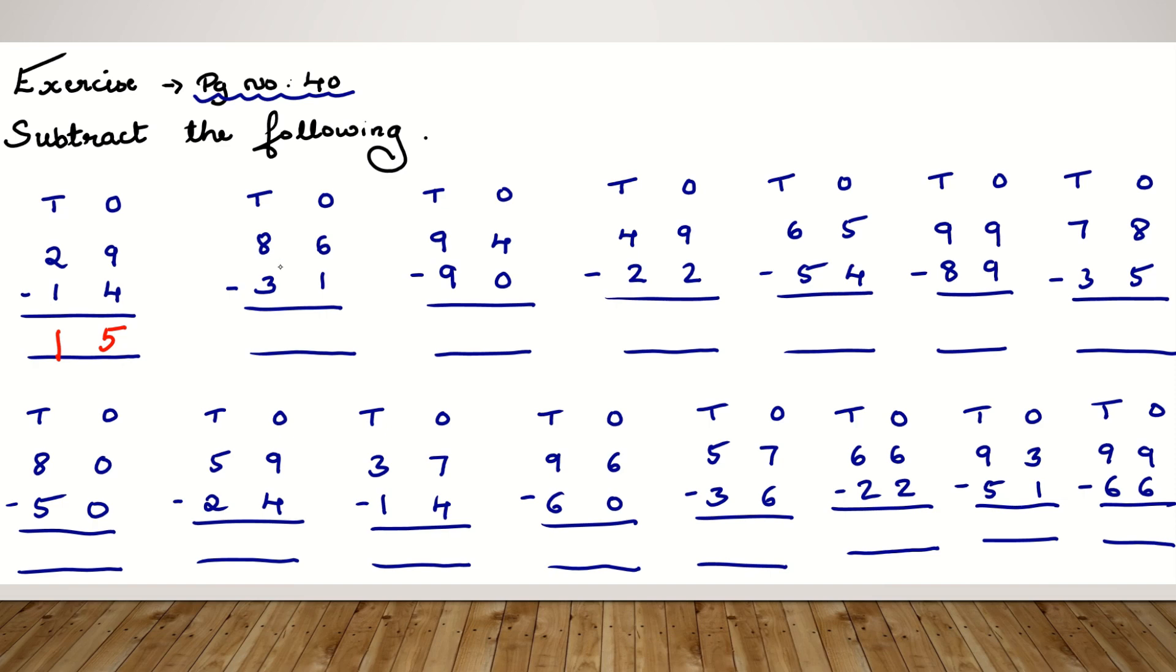Next question. 86 minus 31. So first step is solve the ones column. That is 6 ones minus 1 ones. Draw 6 lines and cancel 1 line. So the remaining lines are 1, 2, 3, 4, 5. And at the 10s column, draw 8 lines and cancel 3 lines. And the remaining lines are 5. And the answer we get here is 55.